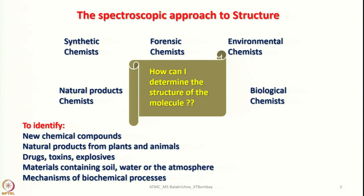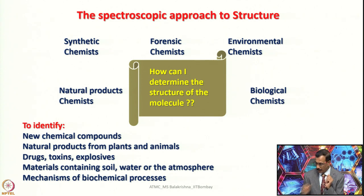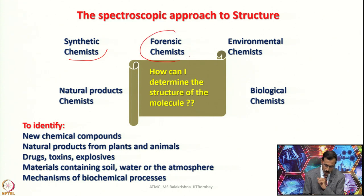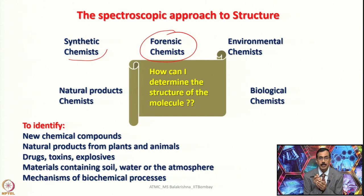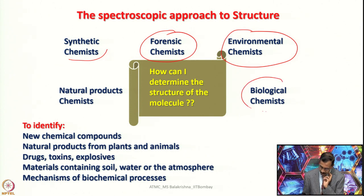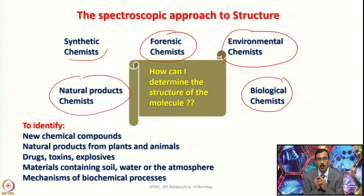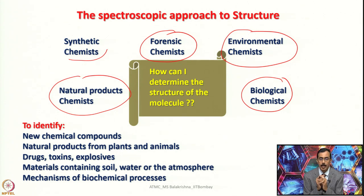Nowadays spectroscopic methods are widely used not only by inorganic chemists but also by synthetic chemists — which includes both organic and inorganic chemists — and by forensic chemists, who use them to analyze samples and ascertain toxicity. Environmental chemists also find them vital, biological chemistry is inseparable from spectroscopic methods, and natural products chemists use them to understand compounds extracted from natural resources, identify impurities, and determine how to purify them.